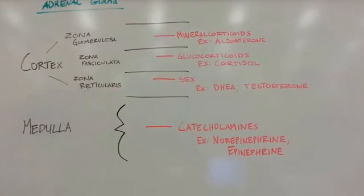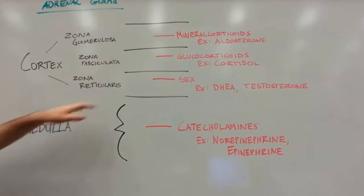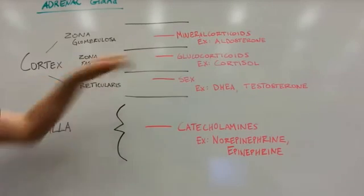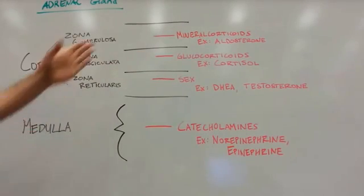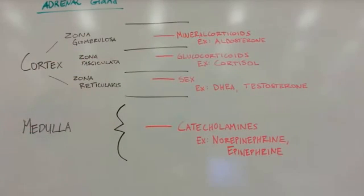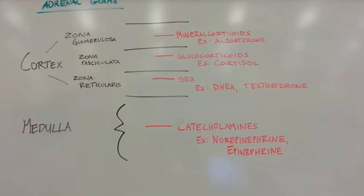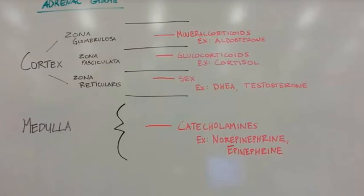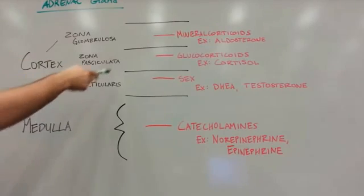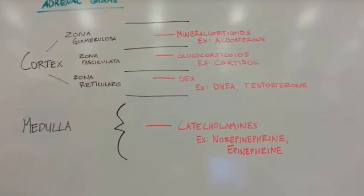Next, you've got the zona fasciculata, which is going to secrete glucocorticoids. An example of that is cortisol. That is going to be under the control of the hypothalamus-pituitary-adrenal axis. ACTH will be the main stimulant for that.